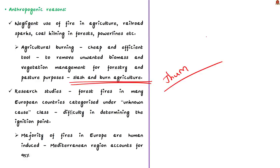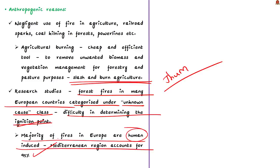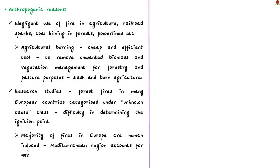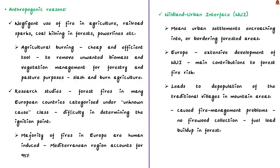If you take European countries, forest fires are categorized as unknown class due to difficulty determining the ignition point. However, certain studies suggest that as per available statistics, majority of fires are human induced in Europe. The Mediterranean region alone accounts for larger proportion of human caused fires in the world. Around 95 percent of human caused fires happen in the Mediterranean region.